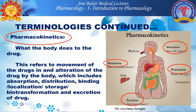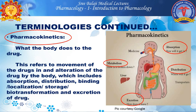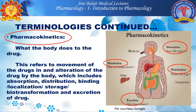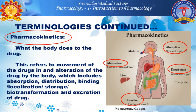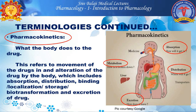In summary, this picture explains pharmacokinetics in a nutshell. Absorption: how will it get in? Distribution: where will it go? Metabolism: what happens to it? And finally, excretion: how is it going out of the body? So pharmacokinetics is what the body does to the drug.